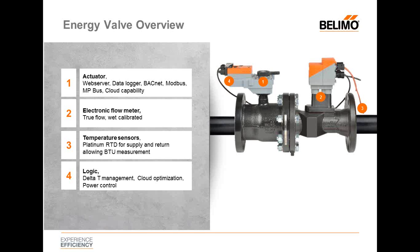We've integrated cloud optimization with an advanced analytics profile, along with core cloud services. We also have something called power control built in. You can set a flow limitation, or what we call a VMAX in a particular GPM, but you can also set a PMAX, or a power limitation, so the valve can be controlled to a specific power output as well. This makes the valve temperature and pressure independent.